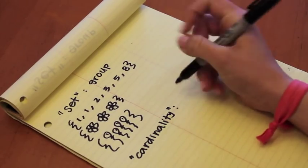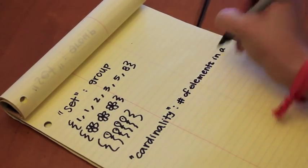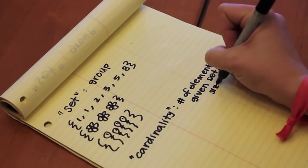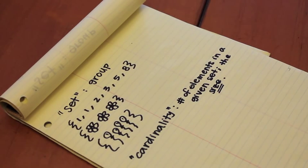Mathematicians use the word cardinality to express the number of elements in a given set. Our first set has a cardinality of 6, our set of flowers has a cardinality of 3, and our set of balloons has a cardinality of 4, because there are 4 balloons.